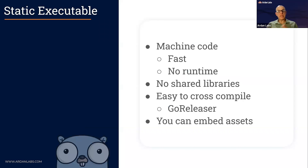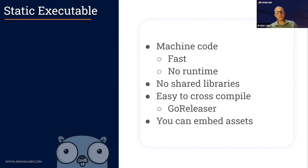Go makes deployment easier in several ways. One of the things is Go is compiled to machine code in a single static executable. Machine code means it's fast. The Go compiler is not as efficient as the LLVM toolchain or GCC, but it's pretty fast, and every release they're adding more optimizations to it, so it is going to be fast.